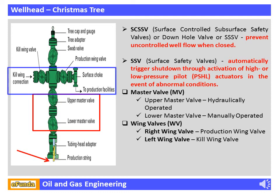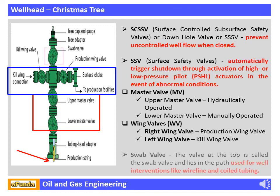The second valve type is wing valves. The right side wing valve, the flow wing valve, is in the path of flow of hydrocarbon or crude oil which is taken to production facilities — it is also called the production wing valve. The left hand side wing valve is the kill wing valve, which is used for injection of fluids such as corrosion inhibitors.